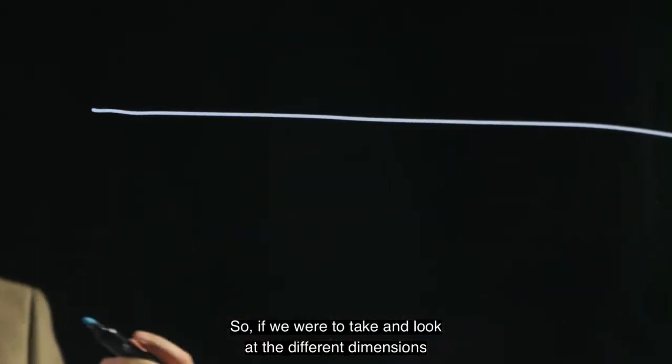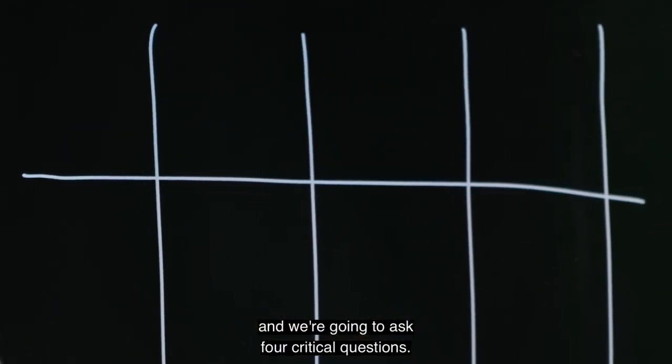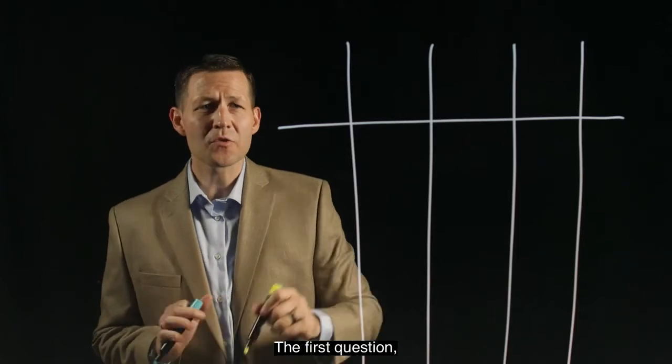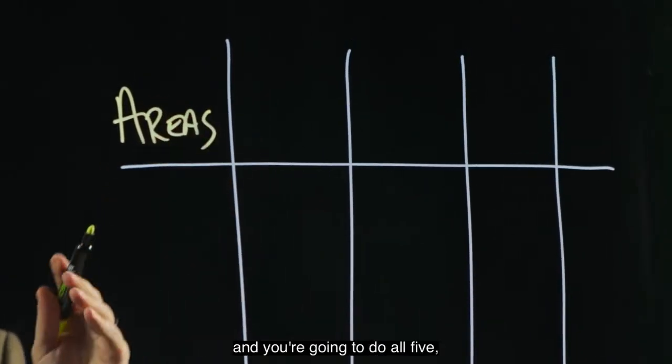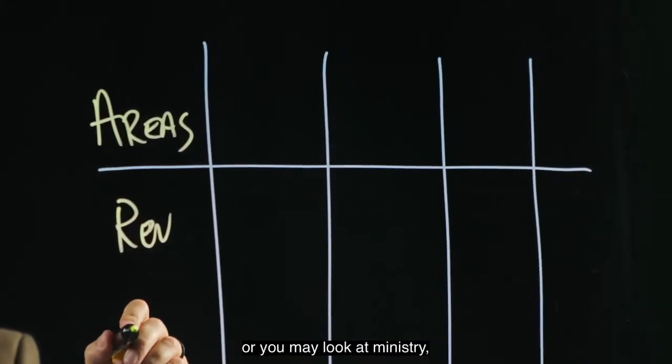So if we take and look at the different dimensions of a five-point alignment matrix and we're going to look at all the different areas, we're asked four critical questions. The first question: we're going to think about the areas of our business, and you're going to do all five, but just for example, we're going to look at revenue, or you may look at ministry, you may look at people and talent.